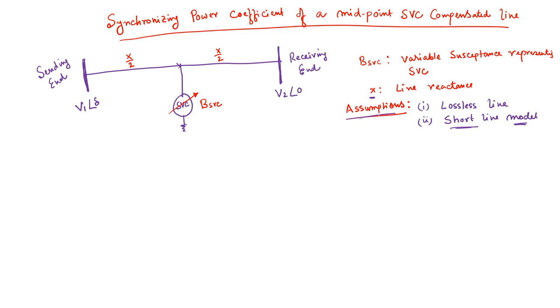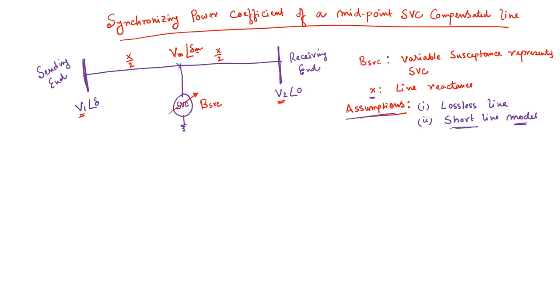If the derivation is done for a short transmission line model, the same approach can be applied to a long line model. The midpoint voltage is Vm at angle δ_m. For a symmetrical line (V1 = V2), δ_m = δ/2, but we keep it as δ_m for now. Applying KCL at the midpoint node gives the current balance.